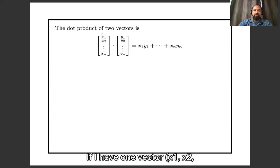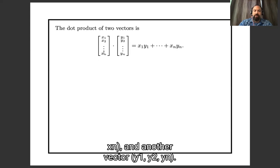If I have one vector x1, x2, xn, and another vector y1, y2, yn, the dot product is x1y1 plus x2y2 plus et cetera, et cetera, xnyn.